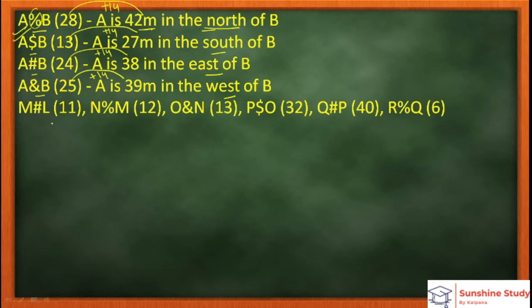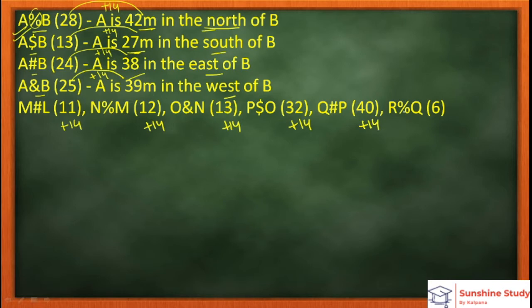What we do here is add 14 to each number, because all the numbers differ by 14. So from 13 we get 14, then 27. From 24 we get 14, then 38. We then add 14 again. After adding: the results are 25, 26, 27, and this one will be 46.